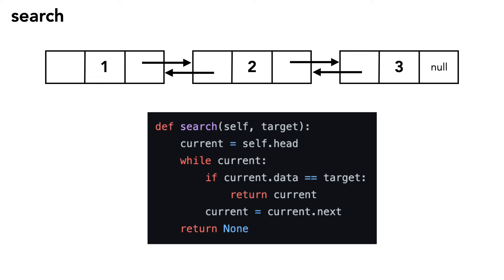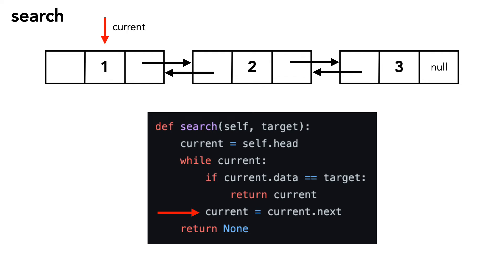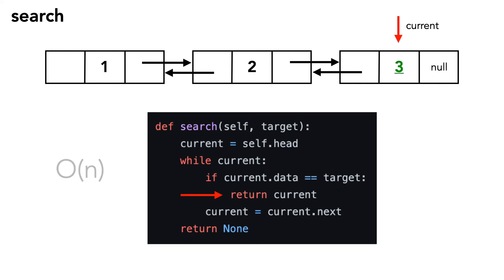The first operation I want to discuss is search. Let's use the following list and search for the node with the data value of 3. We set a current node equal to the head of the linked list. While current is not null, we iterate through the list, comparing the data of the current node to our target. If they match, we return the current node. Otherwise, we set current equal to current's next. In this example, we pass over 1 and 2 until we get to the third node, where the data is equal to our target. In the worst case, we'll visit every node in our list, so time complexity is O(n).